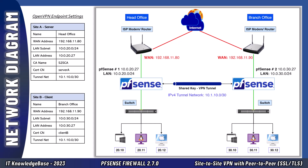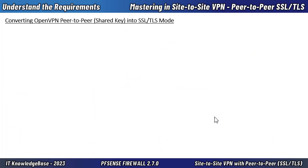We have already covered enough technical details about setting up this site-to-site VPN with peer-to-peer shared key. The task is to get rid of this deprecated peer-to-peer shared key VPN mode as quickly as possible and convert it into peer-to-peer SSL/TLS mode with minimal downtime. Converting this requires a brief delay. Understand the requirements to establish OpenVPN SSL/TLS VPN — if you're already running an OpenVPN peer-to-peer shared key and looking to transition into SSL/TLS mode, keep in mind all these essentials and prerequisites.